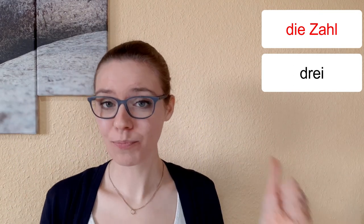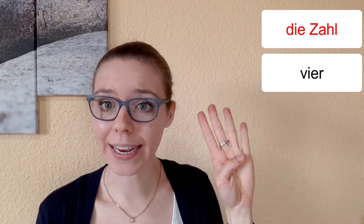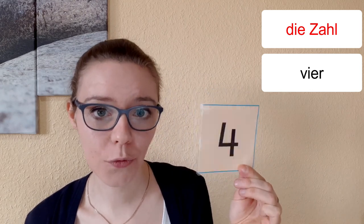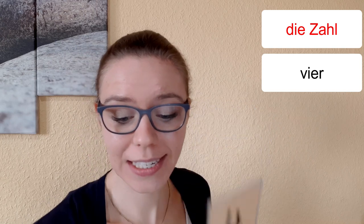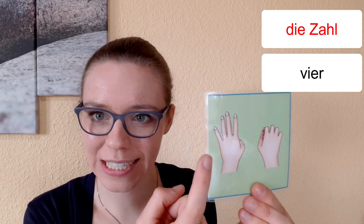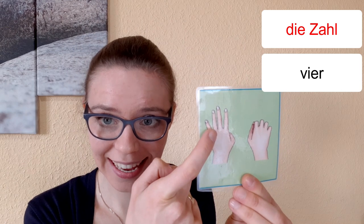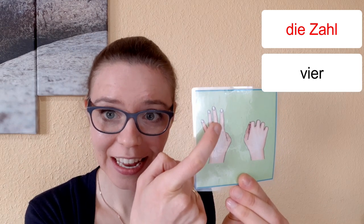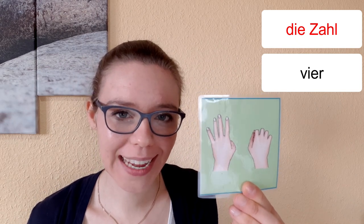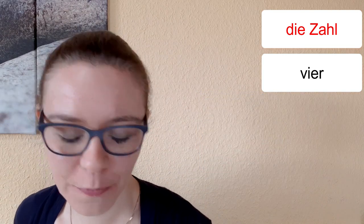Die nächste Zahl. Eins, zwei, drei ist vier. Das ist die Vier. Vier. Und es gibt auch vier Finger. Kannst du sie zählen? Eins, zwei, drei, vier. Vier Finger.